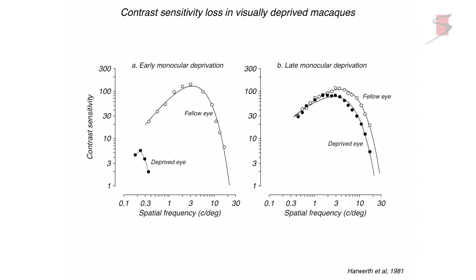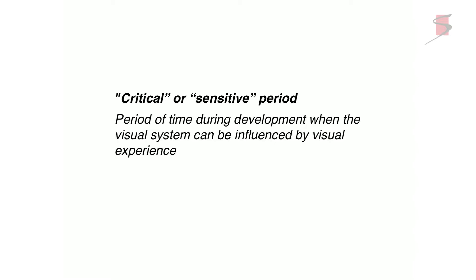If you do the same monocular deprivation procedure at a much older age — like 18 months in a monkey, or if a cataract develops late at five or six years in a child — you won't have the same level of devastation to the visual system; you'll still have some amblyopia, but not as dramatic. That demonstrates what Hubel and Wiesel made a huge point about: the existence of the early critical period, or sensitive period, for vision. It's the period during development when the visual system is vulnerable to abnormal visual experience.